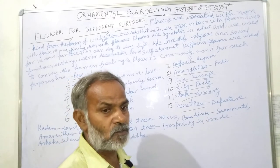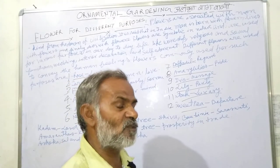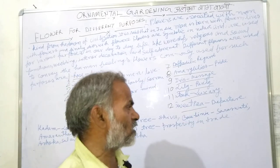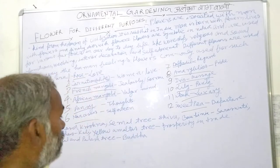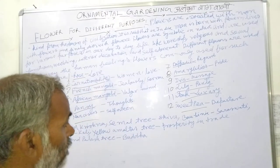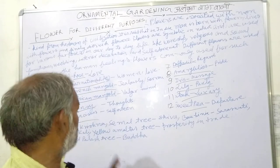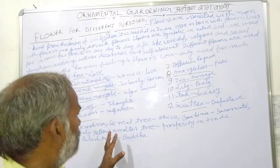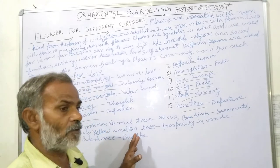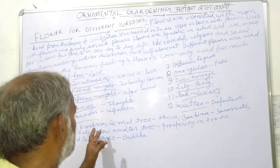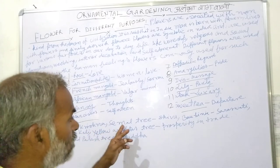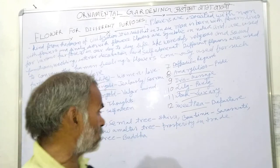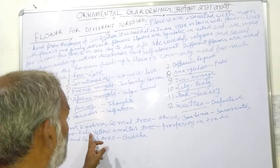This message has lived for an engagement. The flowers are also associated with different Gods and Goddesses, such as Kadam is associated with Lord Krishna, Shemalti is associated with Shiva, Bahuniya is associated with Saraswati, and Amaranthus is associated with Kali.